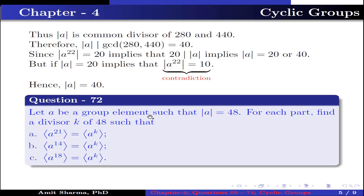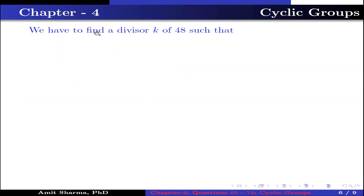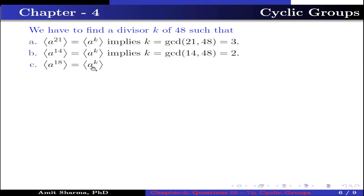Question number 72: let A be a group element such that order of A is 48. For each part, find a divisor K of 48 such that: part A, group generated by A^21 equals group generated by A^K — this implies K = gcd(21, 48) = 3. Part B, group generated by A^14 equals group generated by A^K — this implies K = gcd(14, 48) = 2. Part C, group generated by A^18 equals group generated by A^K — this implies K = gcd(18, 48) = 6.